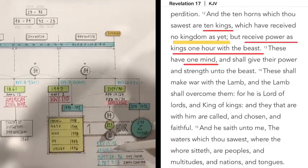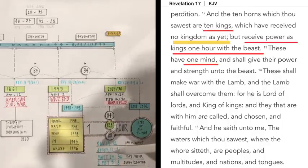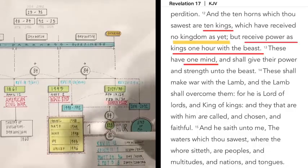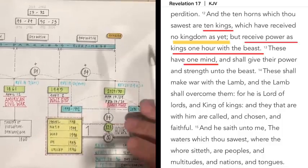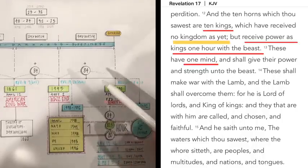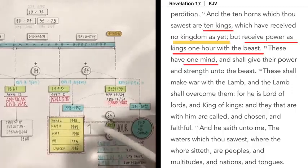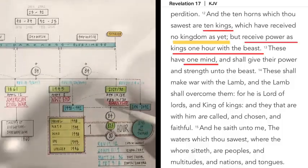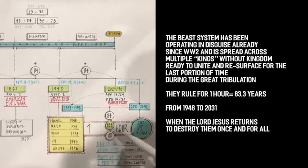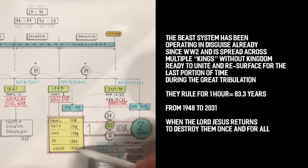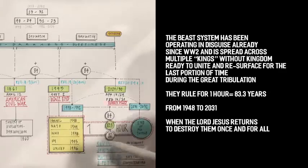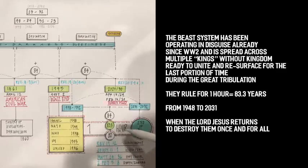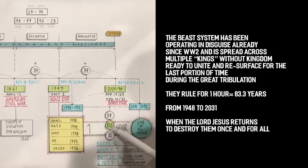Well, if we go to Revelation 17:12, it says, And the ten horns, which you saw, are ten kings, which have received no kingdom as yet. No kingdom as yet. But received power as kings for one hour with the beast. What does it mean? They're receiving power for 83.3 years, not as kings yet, with the beast system, for one hour. What hour? 83.3 years.